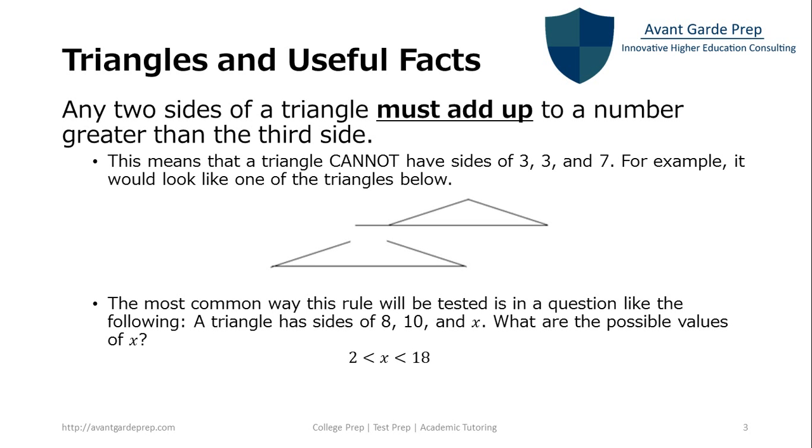On the other hand, 18 would not work because 10 plus 8 is 18, and that actually equals each other. However, if we choose 17: 17 and 10, that's 27, which is greater than 8. 10 plus 8, that's 18, which would be greater than 17. And then 17 plus 8 is 25, which is greater than 10. When dealing with these problems, just make sure that you try all the combinations, and any two sides that you add have to be greater than the third side.